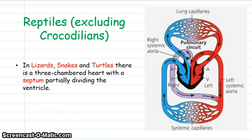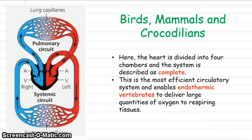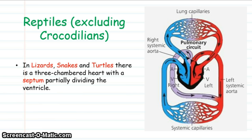Moving on from amphibians to the more primitive reptiles, they still have an incomplete circulatory system whereby the heart looks very similar to ours — it appears to have four chambers — however near the top of the septum dividing each side of the heart there's a small opening, so there's still mixing of the oxygenated and deoxygenated blood.